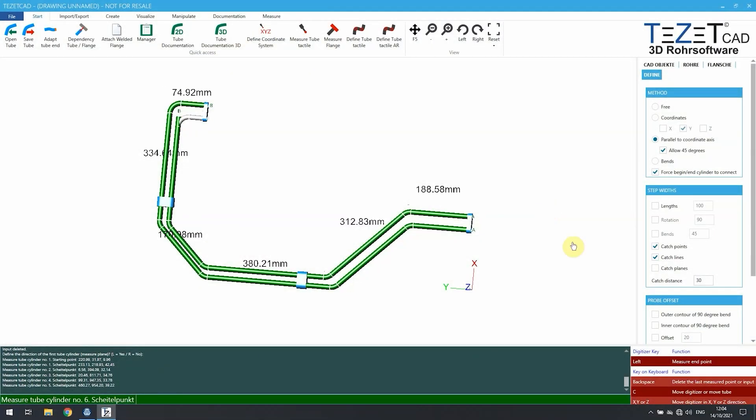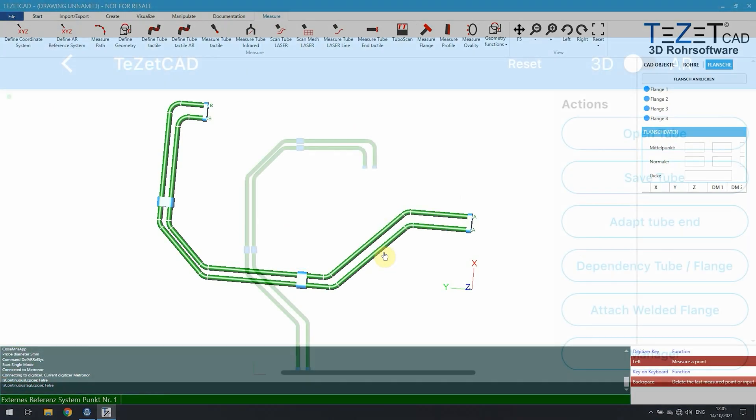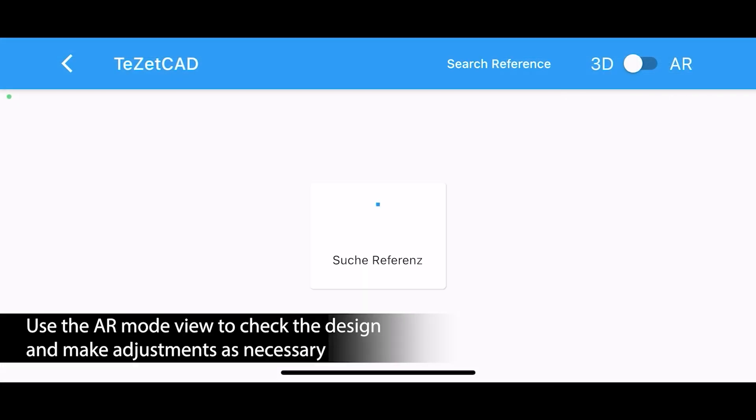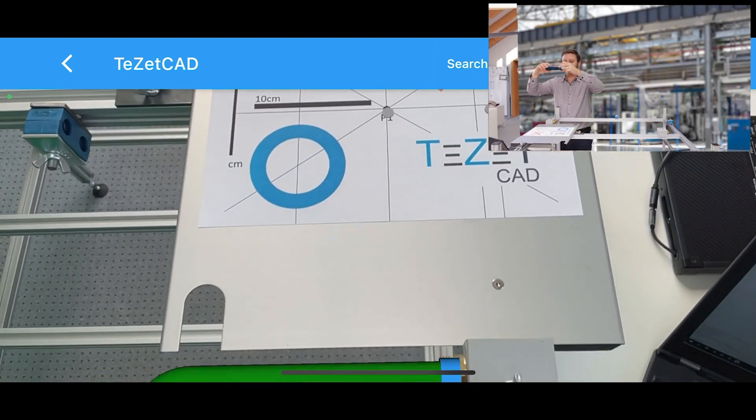TZ has developed a novel pipe fitting function that utilizes constant 3D tracking in an augmented reality viewer, so that even new, less experienced employees can create pipes and tubes that fit perfectly.